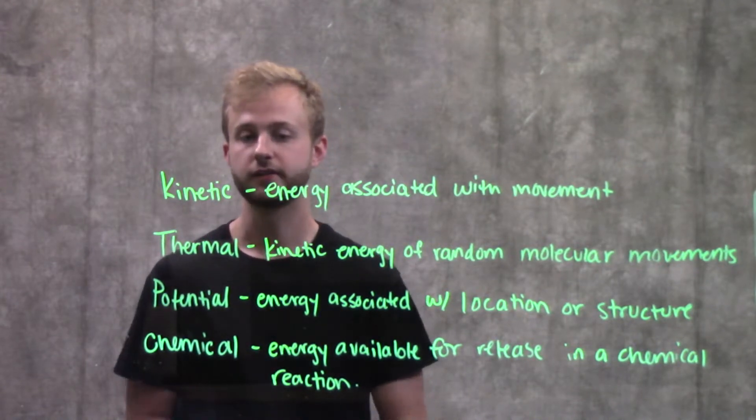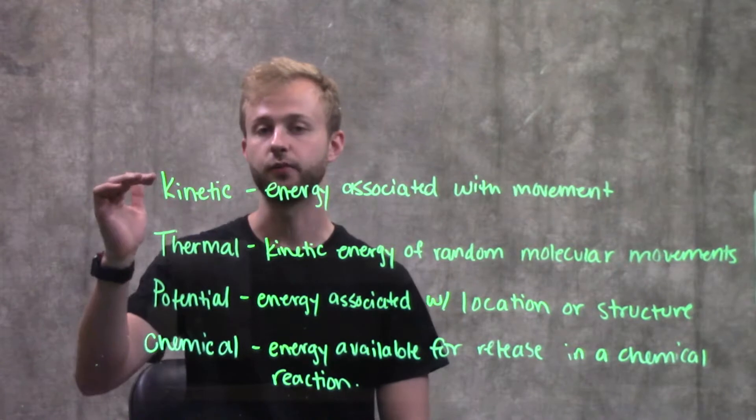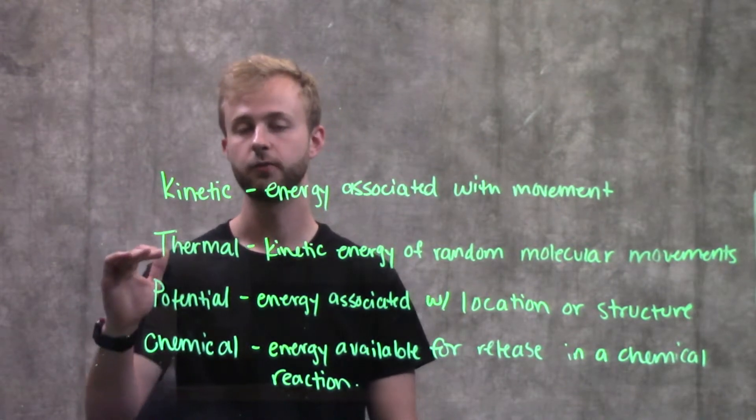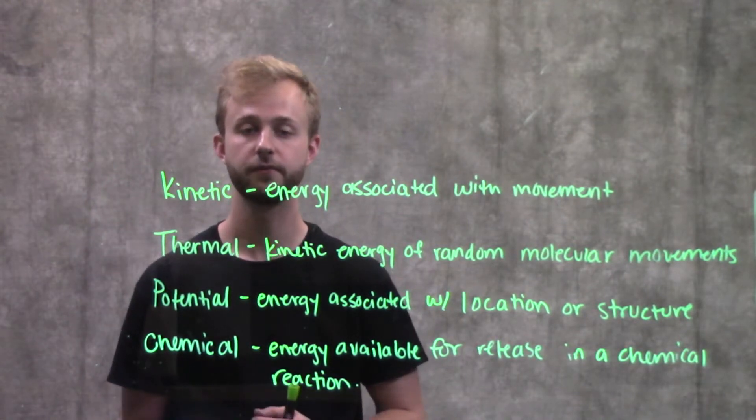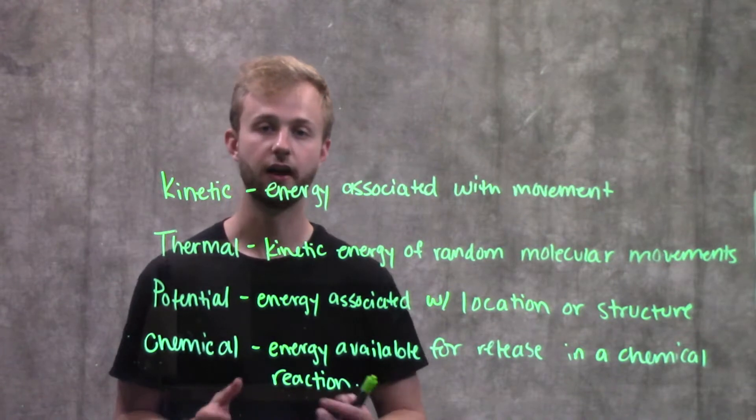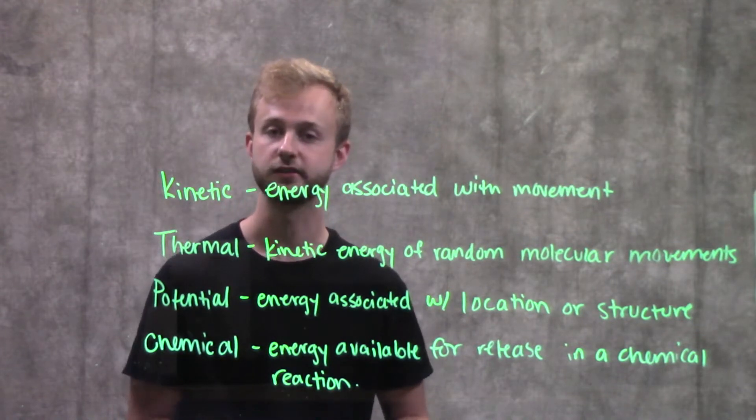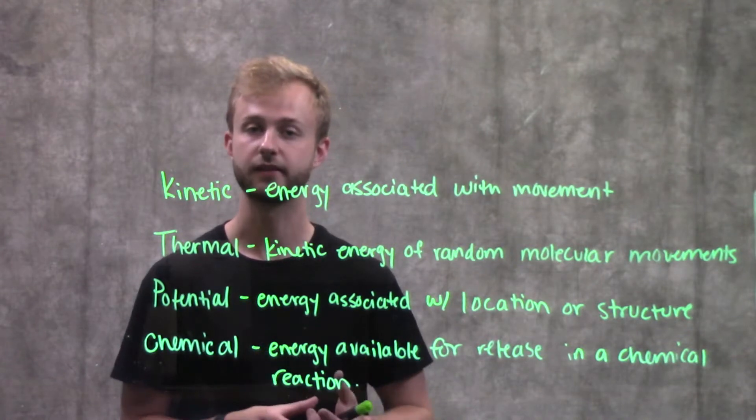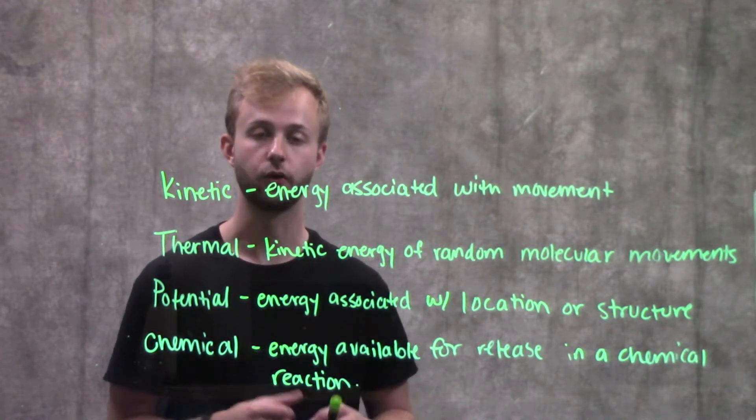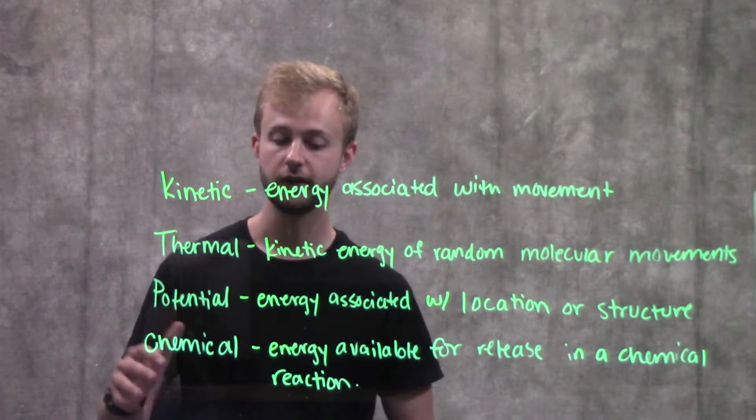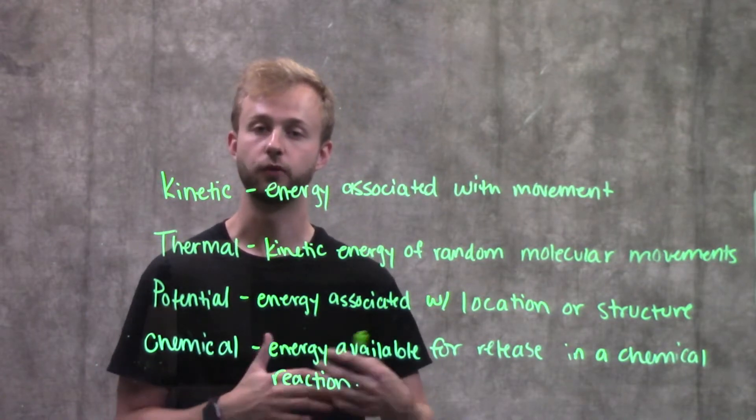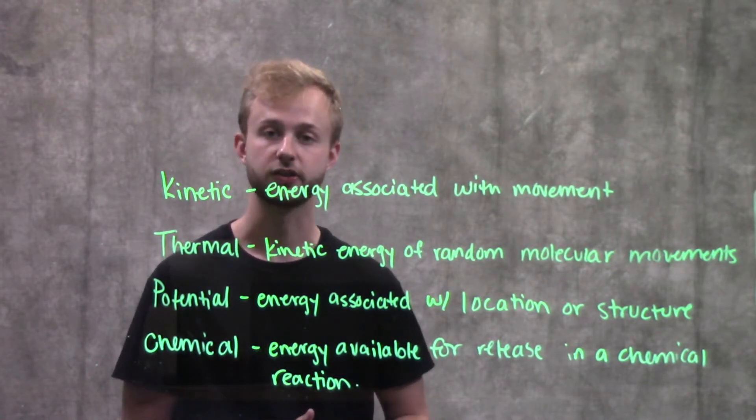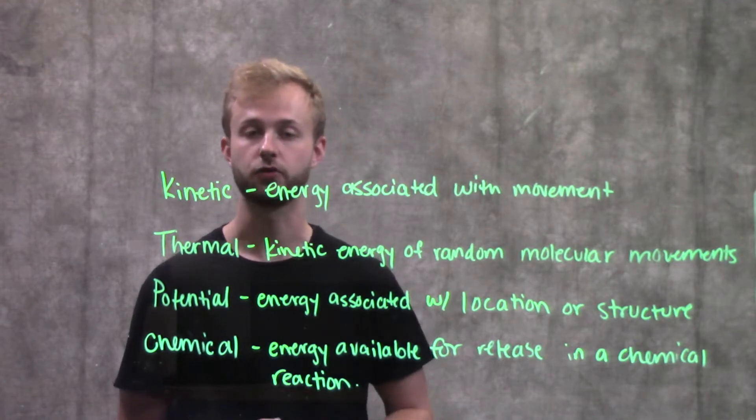Really quickly to sum things up, kinetic energy is energy that we associate with movement. Thermal energy is going to be energy from the kinetic energy of moving molecules within a substance. Potential energy is the energy that an item has because of its location or structure. And then chemical energy is the energy available for release by a chemical reaction from the bonds within that chemical compound.